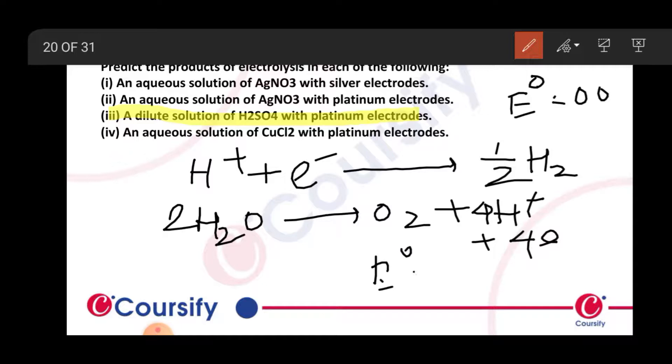The E0 value is 1.23 volts for water oxidation. SO4²- can also form S2O8²-.